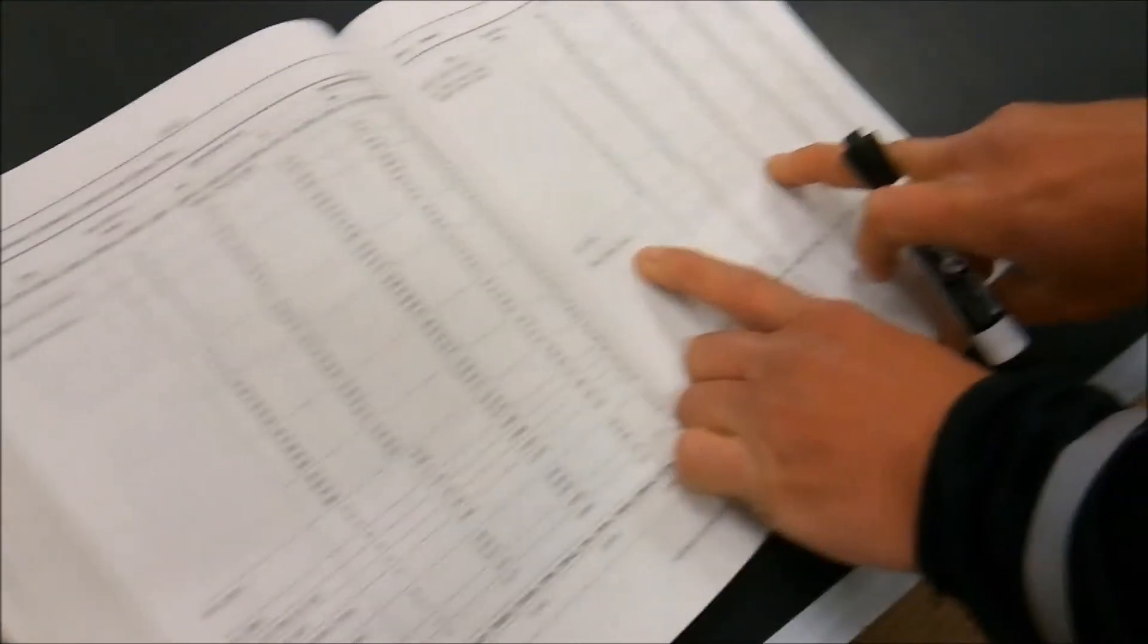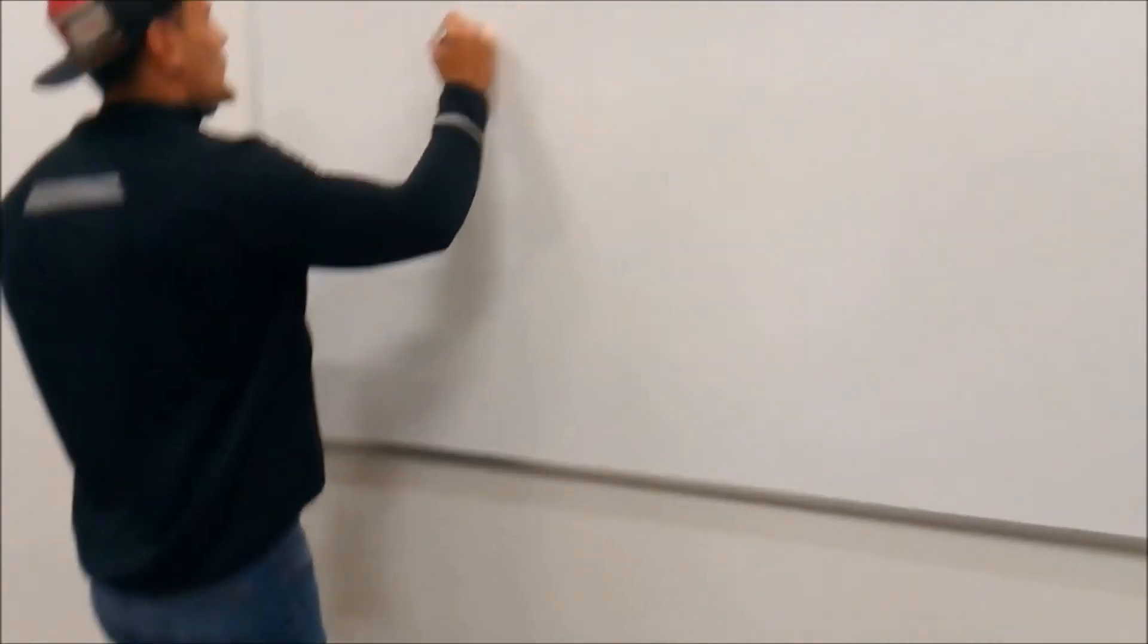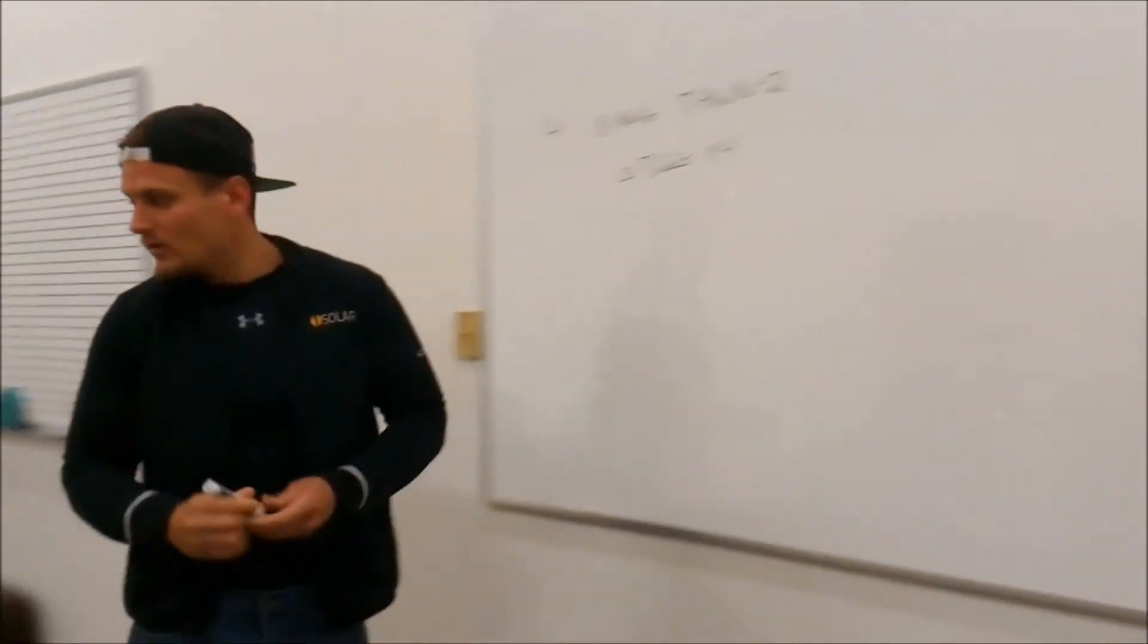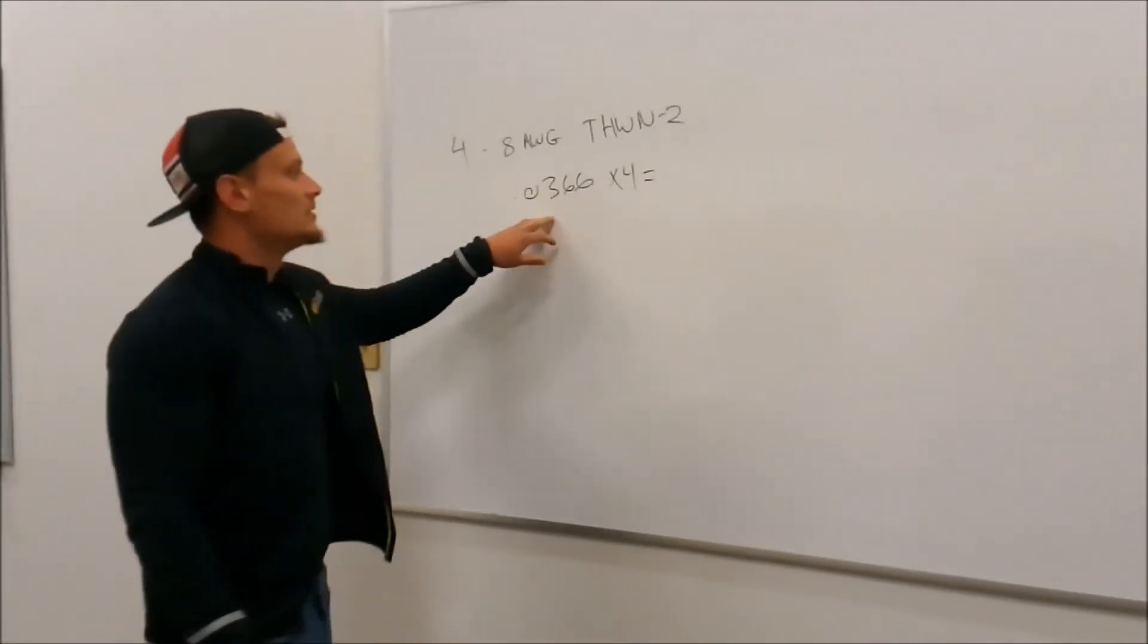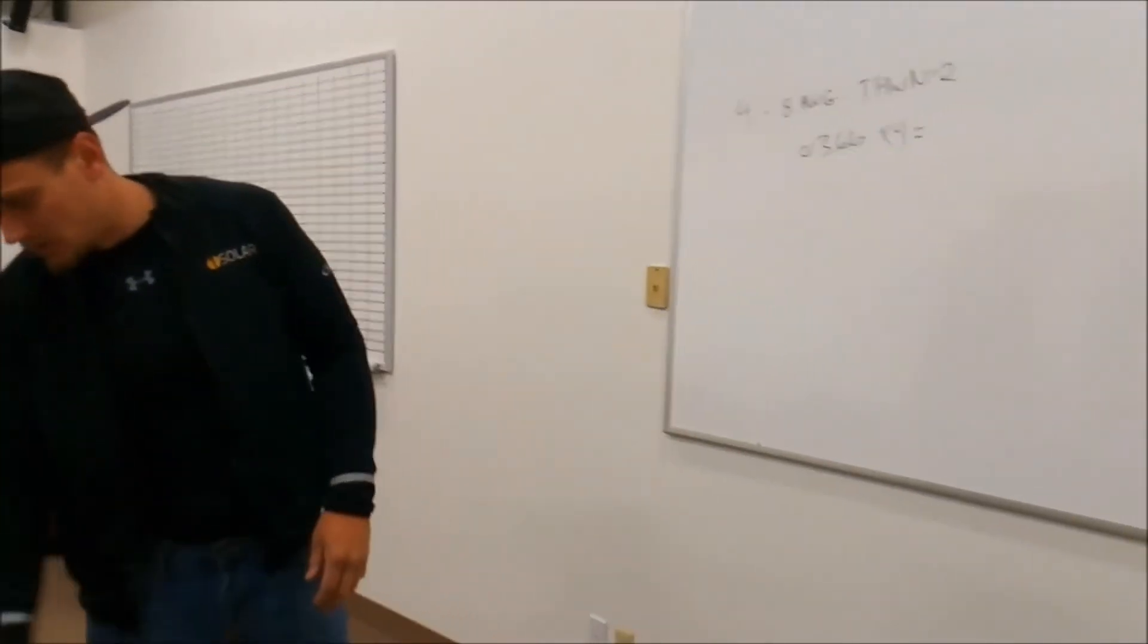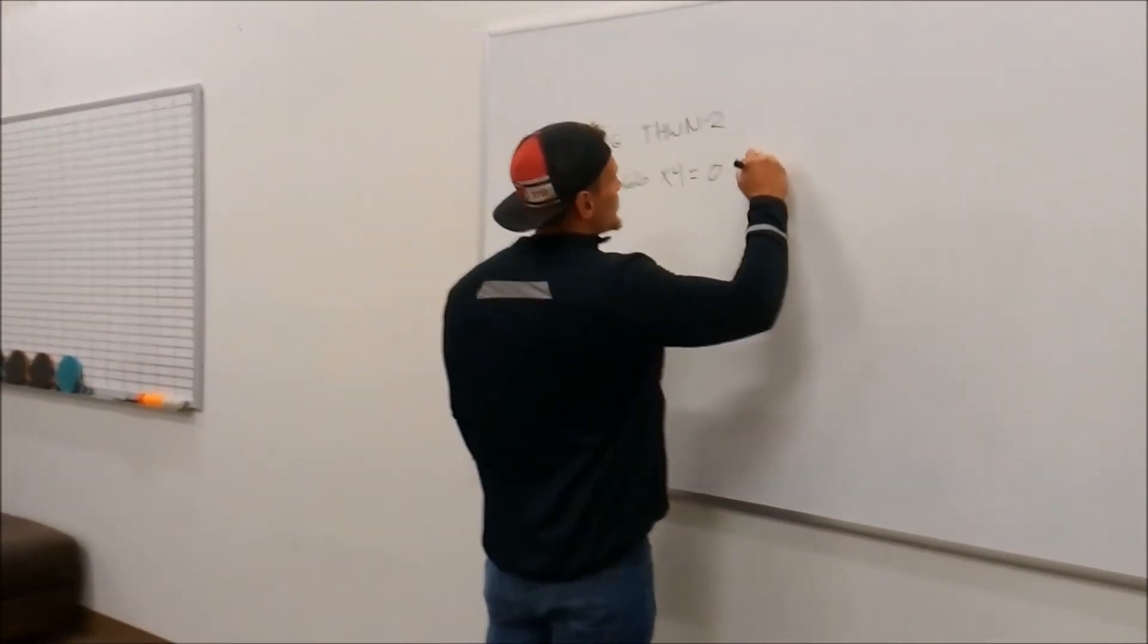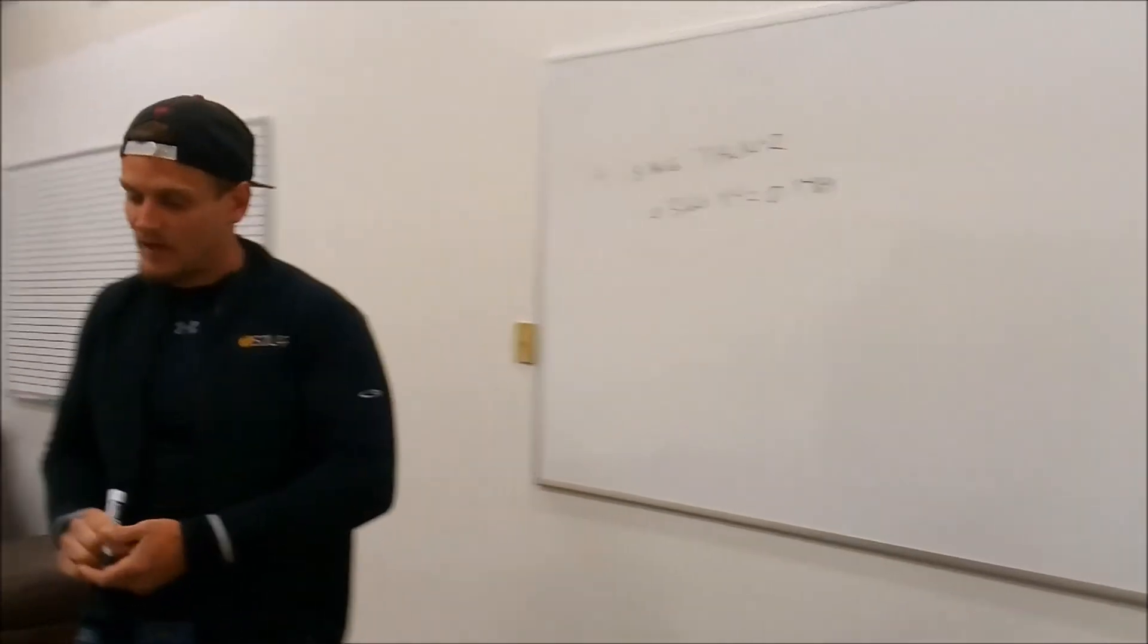So go to the 8 gauge area, we find it's 0.0366. 0.0366. And then multiply it by 4. So 4, 8 gauge THWN2 wires gives us, each one is an area of 0.0366 square inches. Multiply that by 4 gives us 0.1464. So we need to find conduit that will have at least that area.